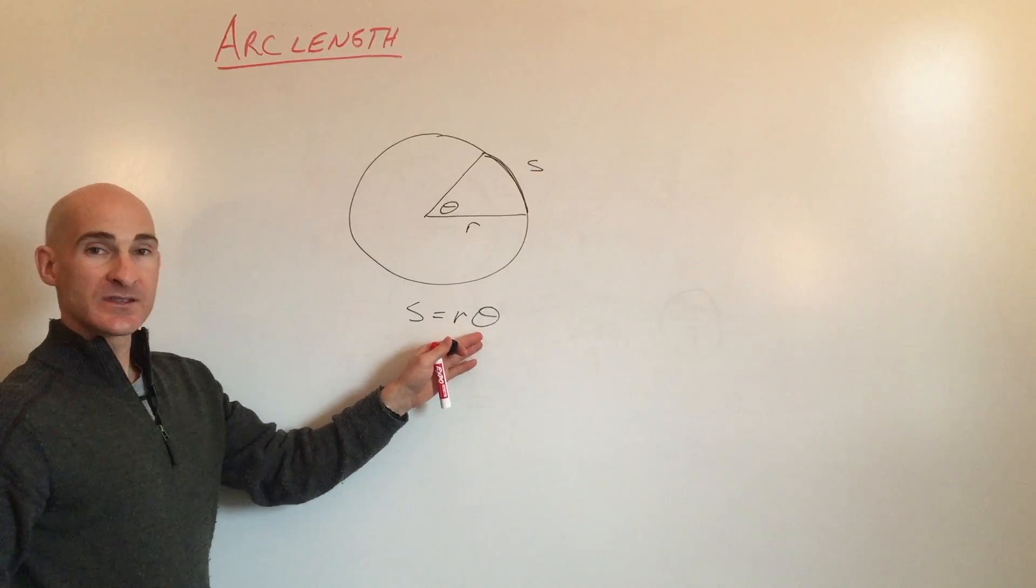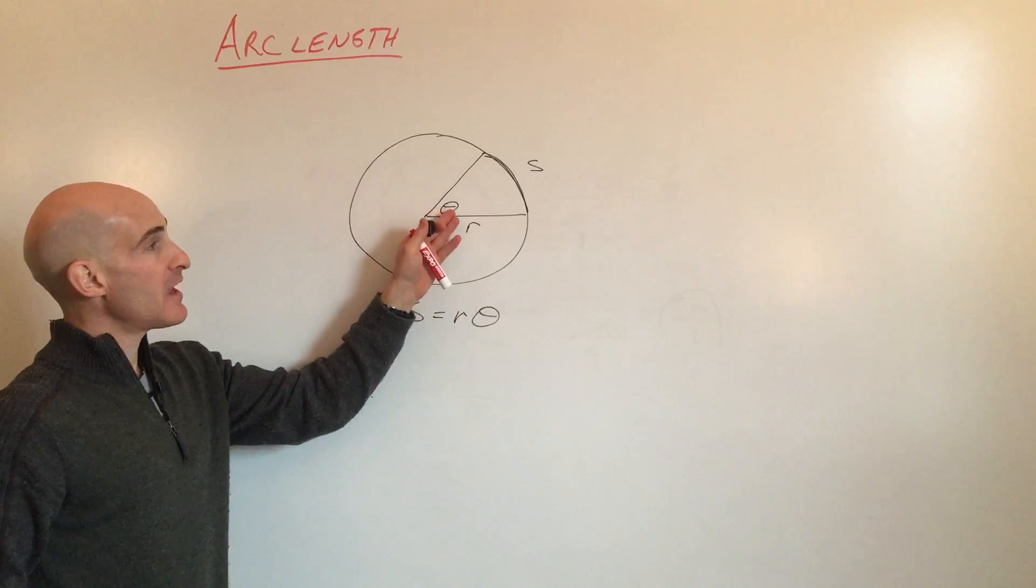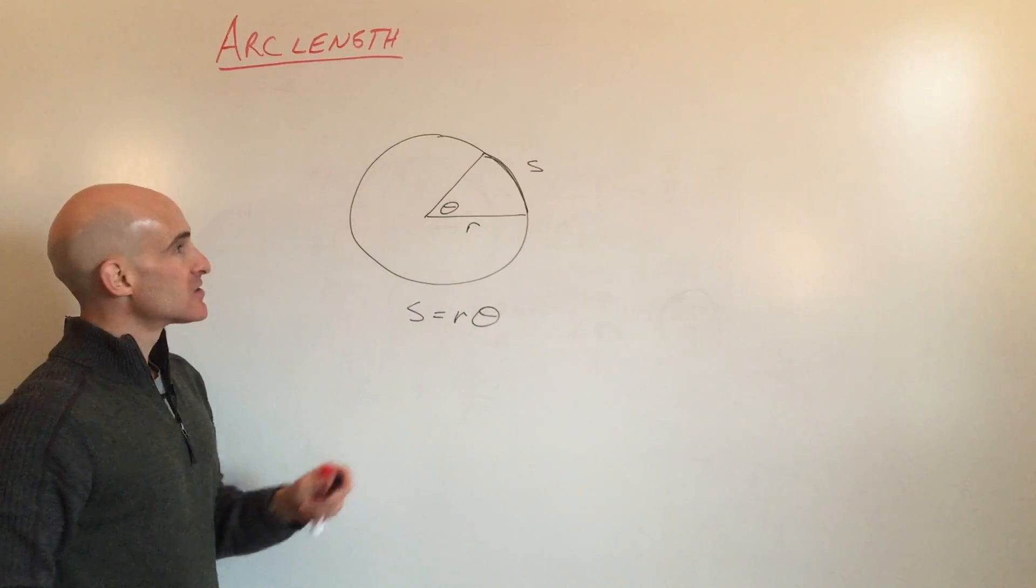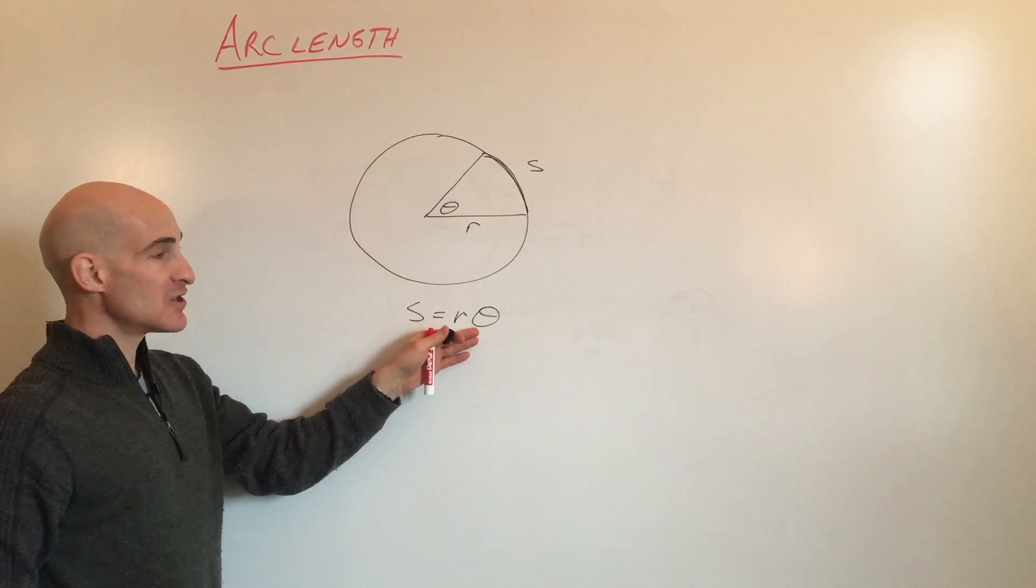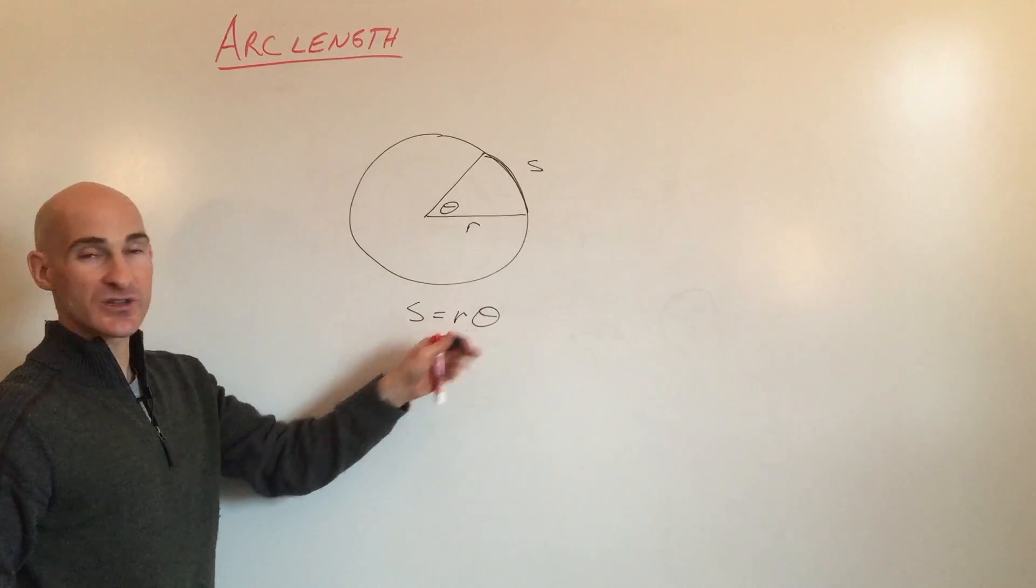The only thing is to use this formula, theta has to be in radians. So if they give you the angle, the central angle in degrees, just convert it to radians, then you can use this relationship S equals R theta.